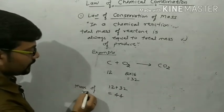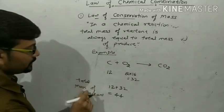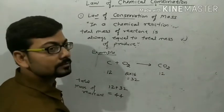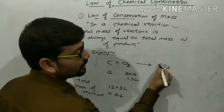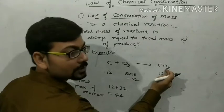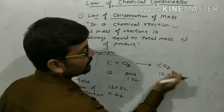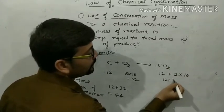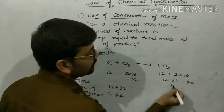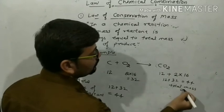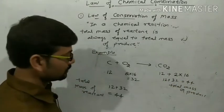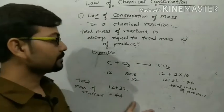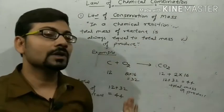The total mass of reactants equals 44. For the product CO₂: carbon is 12, plus 2 oxygen atoms = 2 × 16 = 32, so 12 + 32 = 44. The total mass of the product is also 44. You can see that the total mass of reactants is always equal to the total mass of products — this represents the Law of Conservation of Mass.